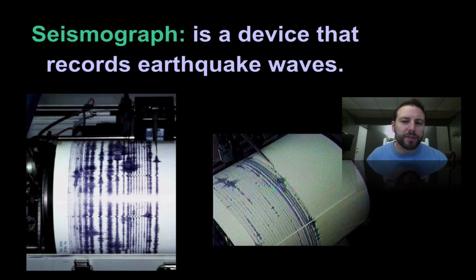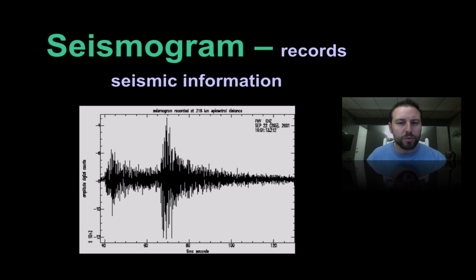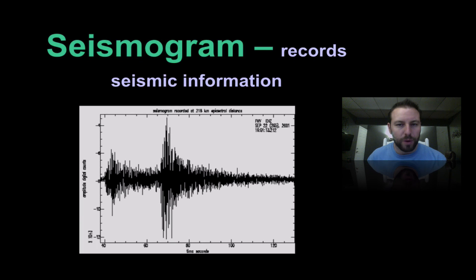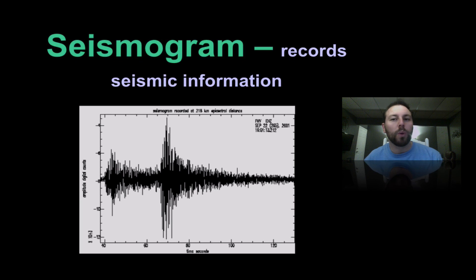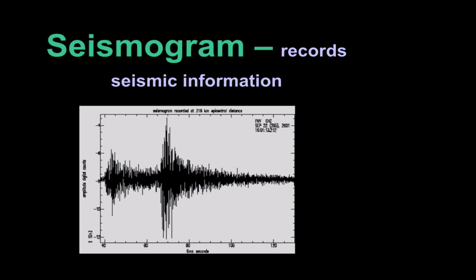Seismographs are devices that record earthquake waves, and they record that on what's called a seismogram. When an earthquake occurs, the needle moves, recording that energy. We're able to analyze these seismograms to pinpoint when earthquakes occurred, how much energy they're releasing, and where they're occurring. We're going to spend a good amount of time talking about seismograms and going over them.